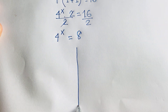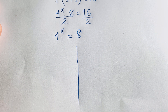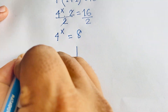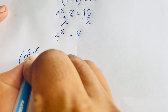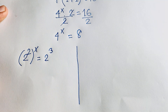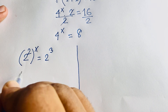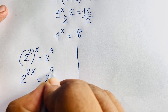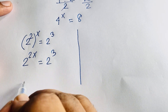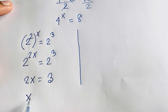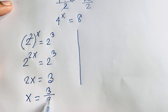We find out the value of x using method 1. So 4 to the power x becomes 2 to the power 2, whole to the power x, equal to 8 which is 2 to the power 3. Now 2 to the power 2x equals 2 to the power 3. Since the bases are the same, the exponents are equal, so 2x equals 3. Dividing both sides by 2, x equals 3 over 2.